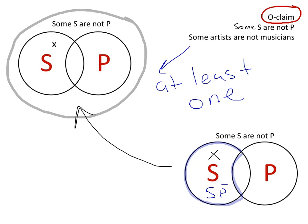At least one member of the S class is not in the P class. And this is the region where the X goes. All right. That wraps up the last categorical claim. That's the O-claim.